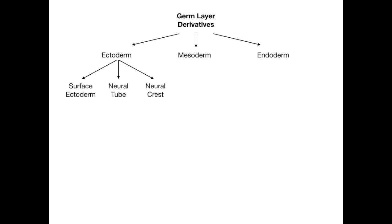If anything comes from the surface ectoderm, the neural tube, or the neural crest, you should know that specifically — but also that it is derived from the ectoderm. We'll start with the surface ectoderm, the neural tube, and the neural crest, because since there are three different types of ectoderm derivatives each with their own derivatives, the ectoderm is the hardest to memorize. The mesoderm and endoderm, as you'll see at the end of this video, are actually pretty easy.